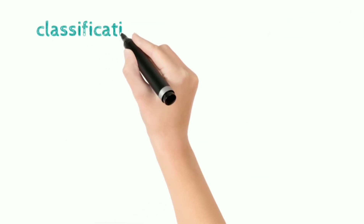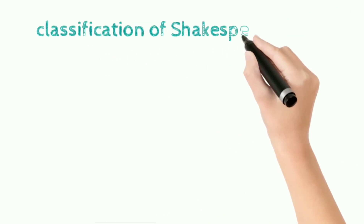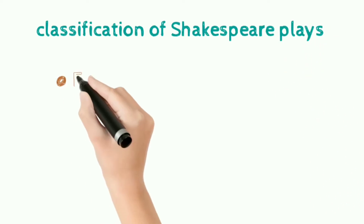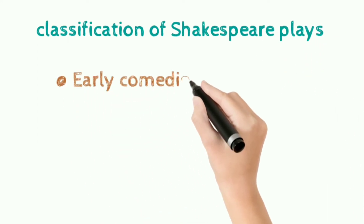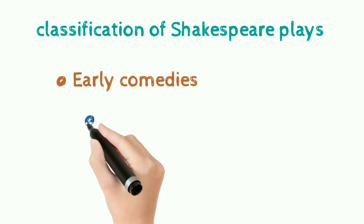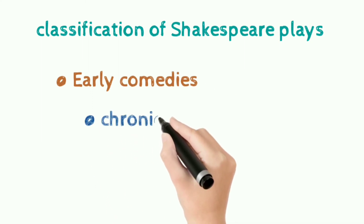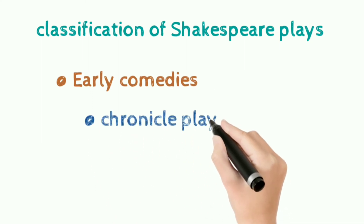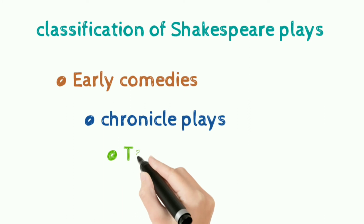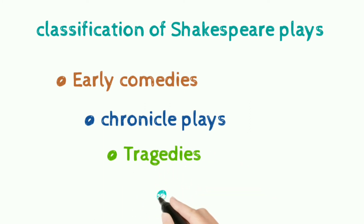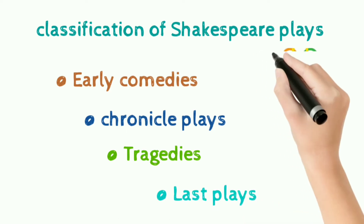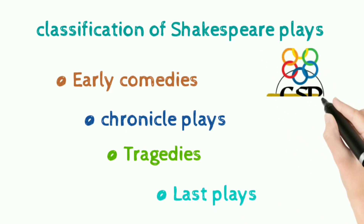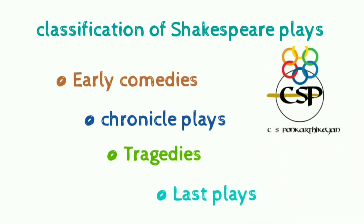The classification of Shakespeare's plays is normally based on his themes. The four categories are: early comedies, chronicle plays, tragedies, and last plays — referring to the plays he wrote in his final period.